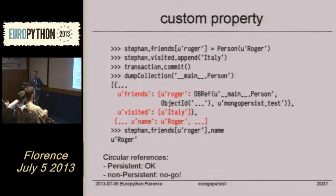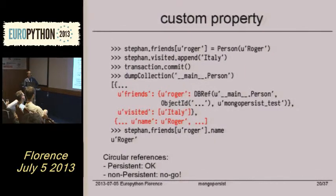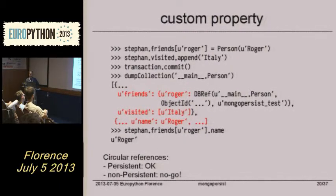If you have noticed, it's very easy to create recursion with person, because I could add one more friend of Roger — probably Stefan again — because they know each other, so you can create a recursion.